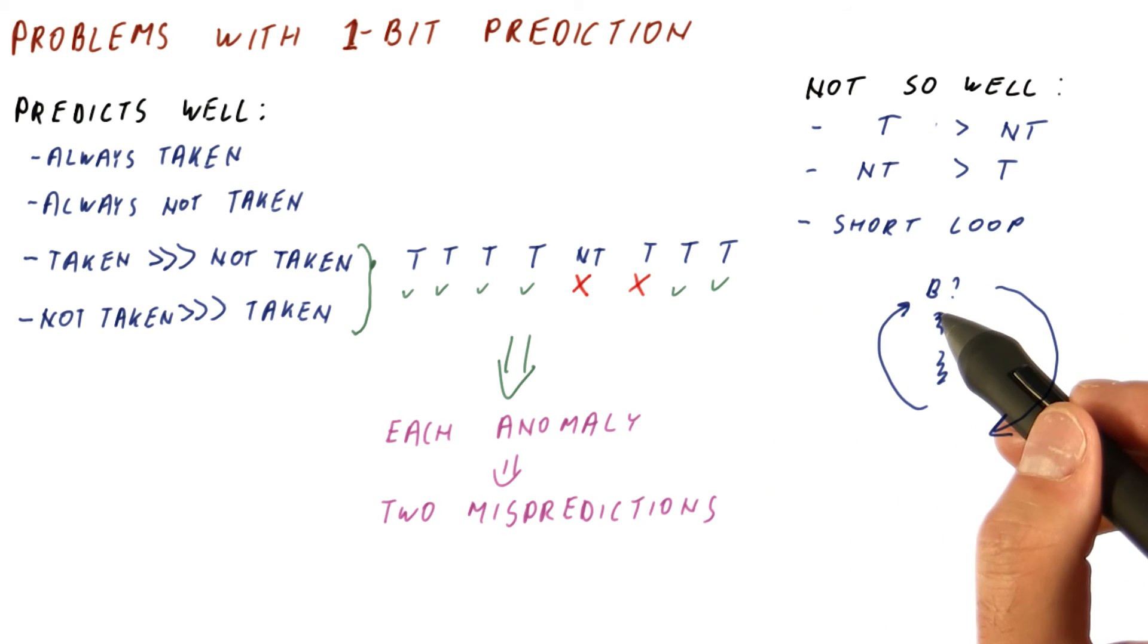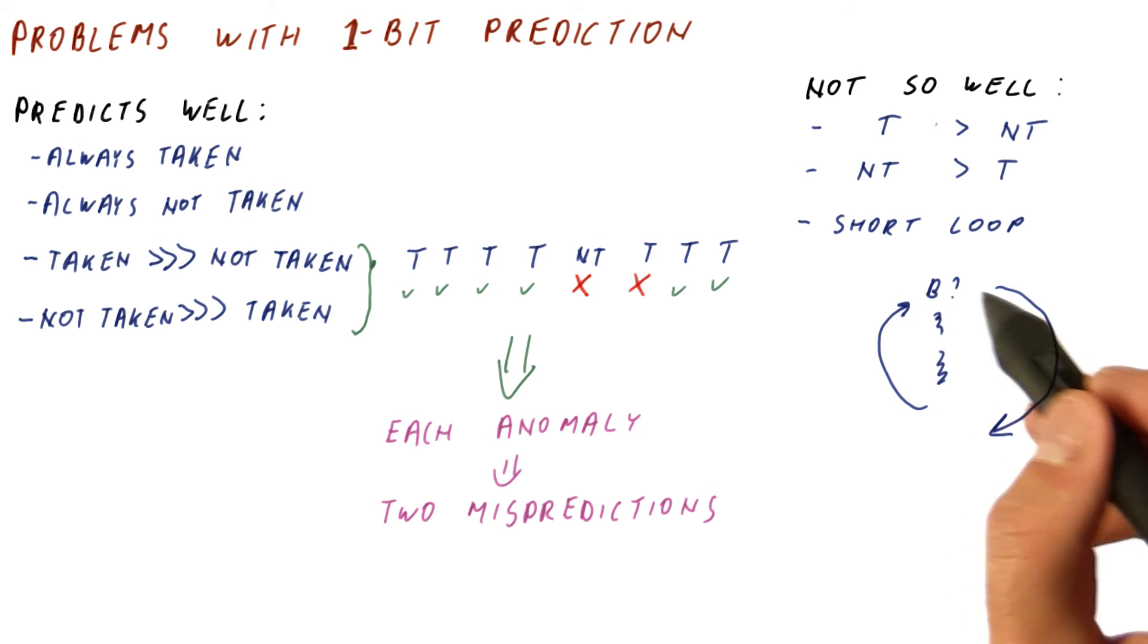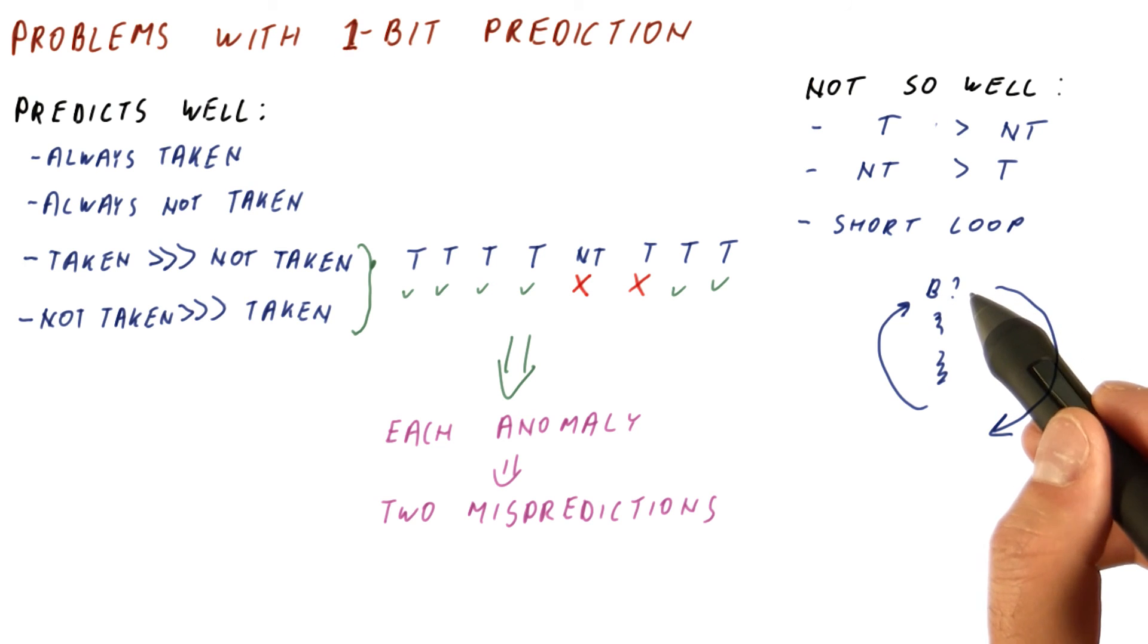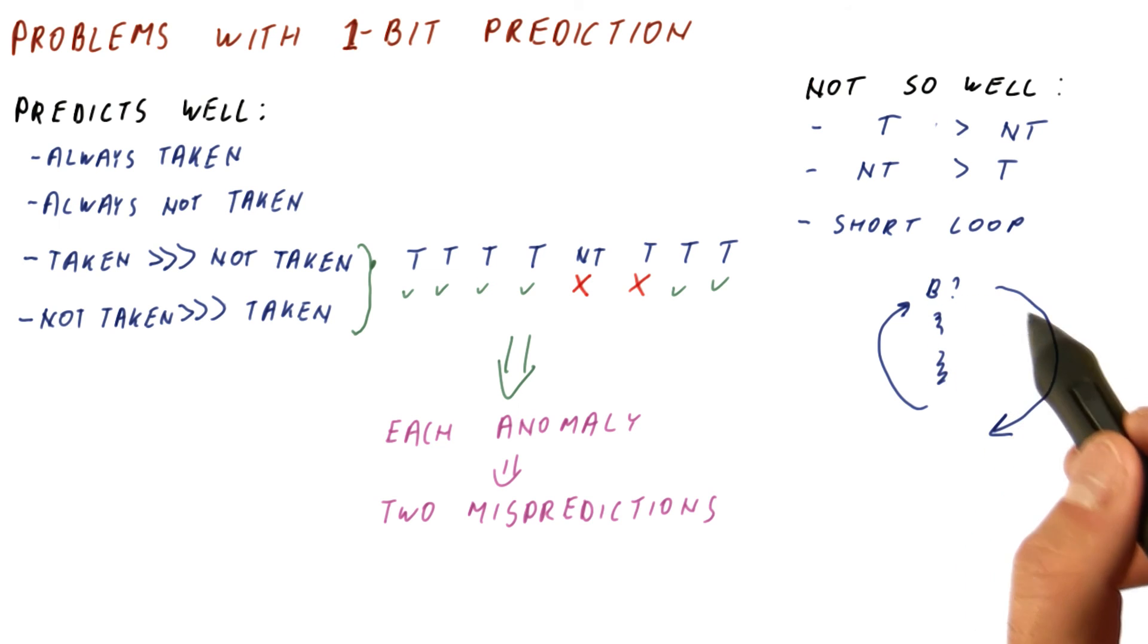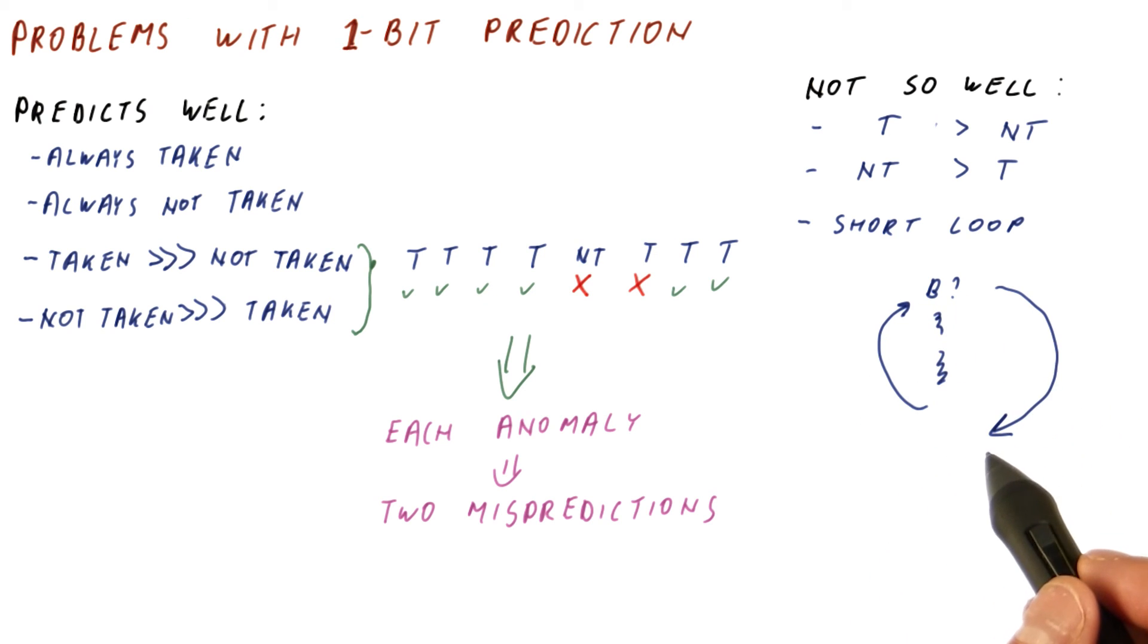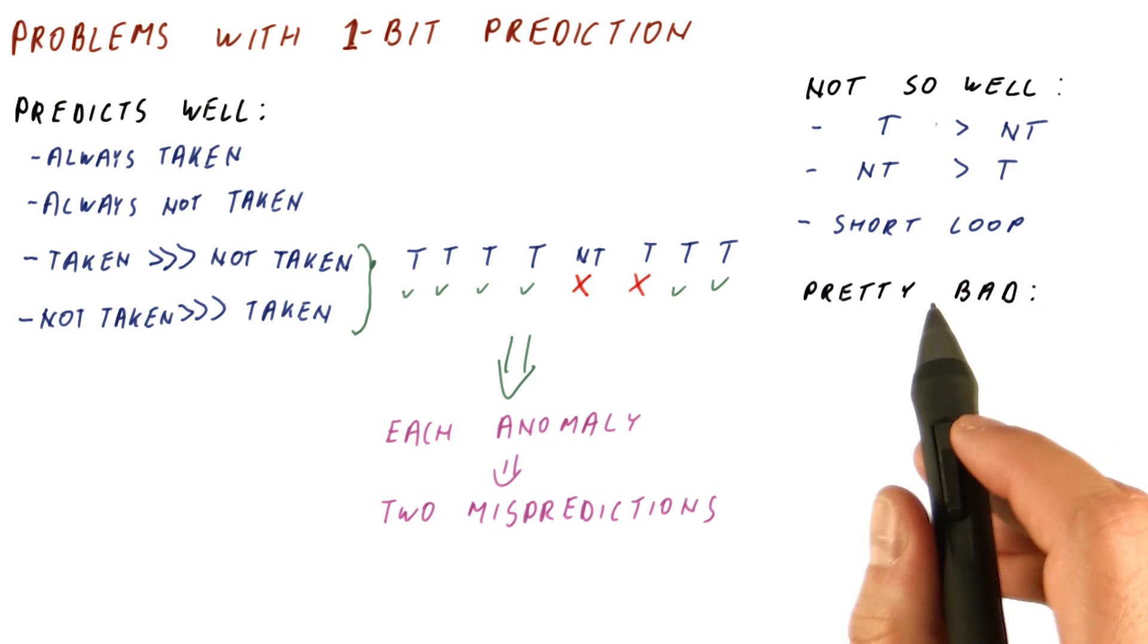When we come back to this short loop, it's going to mispredict the very first iteration for this branch. Because now it's going to think that it should be this way, but in fact, now we're staying in the loop. So if you have, for example, an eight iteration loop, we will have two mispredictions every eight iterations. One at the end of the loop, and one at the beginning of the loop, because the previous ending of the loop trained the predictor that way. And then, of course,